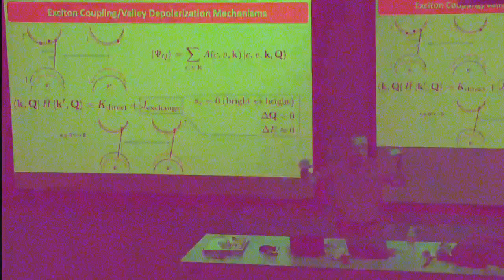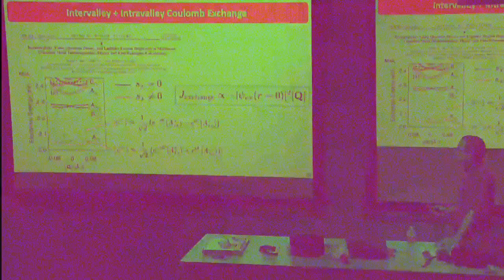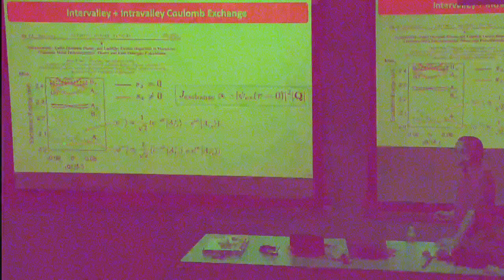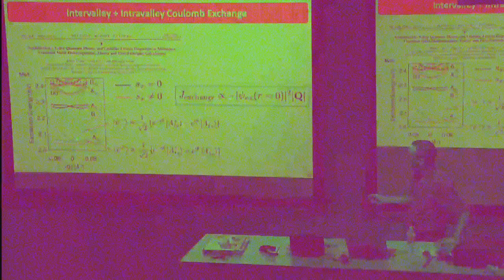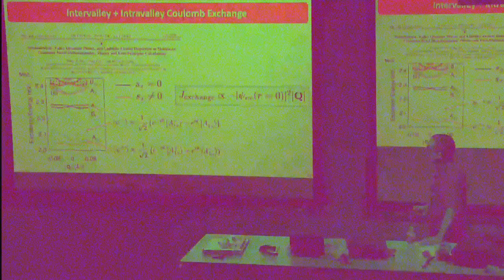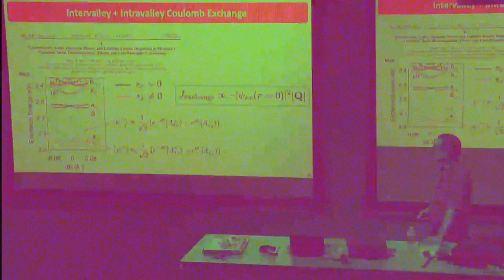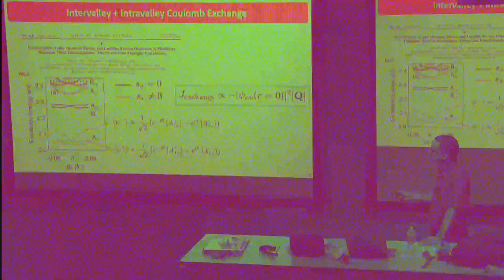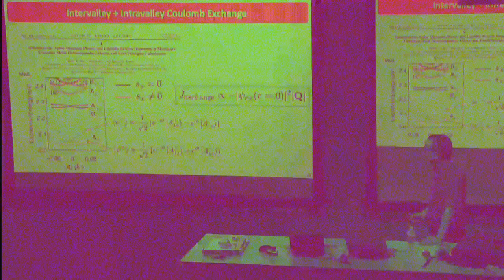Theorists do serious calculations and come up with splittings due to these exciton-exciton interactions on the order of tens of meV, so you'd expect dynamics on roughly 50 to 100 femtosecond time scales. You excite one valley, and you get a quantum beat between the different valley states. This upper band is a superposition of excitons in one valley versus excitons in the other valley with a minus sign, and the lower band is the plus-sign superposition — a classic two-level splitting.